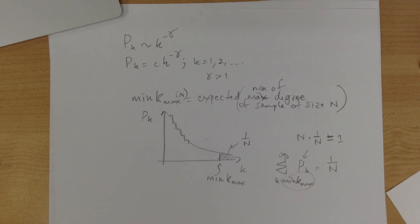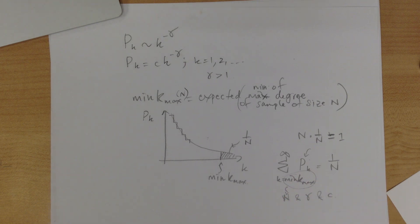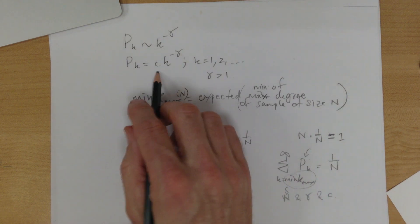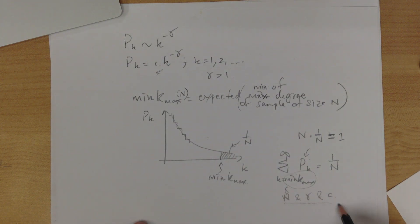And we should get an expression for this as a function of N and gamma and C, where N is the—C is the constant proportionality, and gamma, of course, is the exponent. So you should see something nice there.